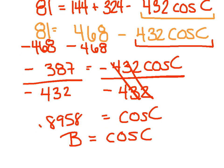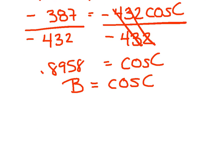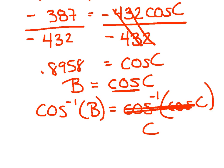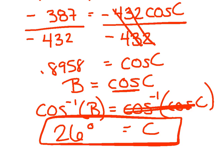To get rid of cosine — to kill it — I take the inverse of both sides. Anytime you want to find an angle, that's the inverse button. And I get an angle of 26 degrees. And there you have it — the last day of our law of cosines practice. We look forward to seeing you tomorrow. Have a great night.